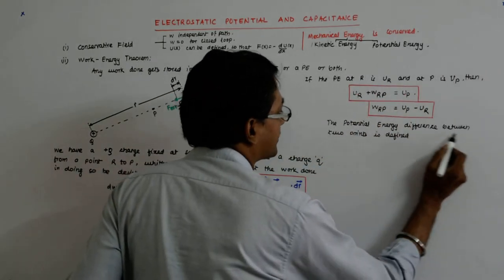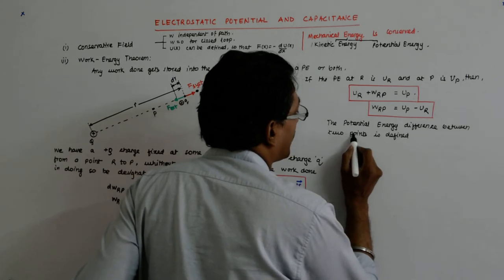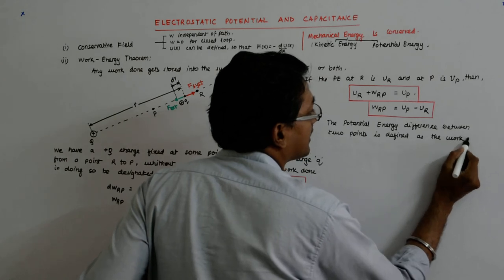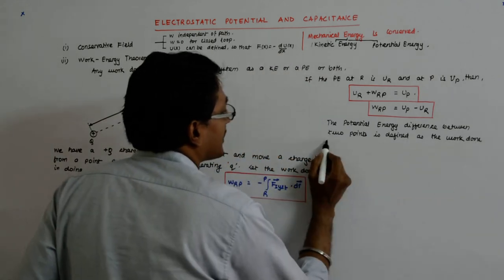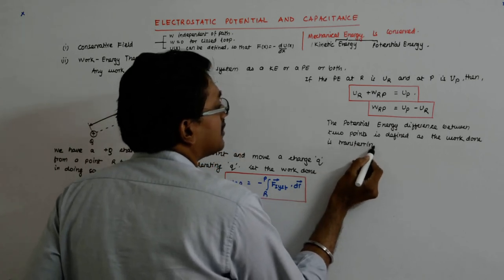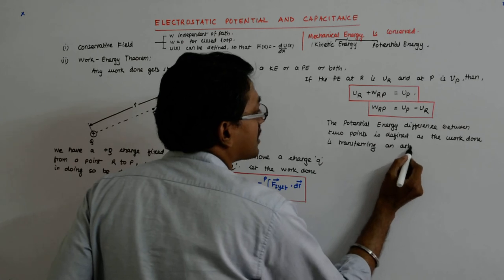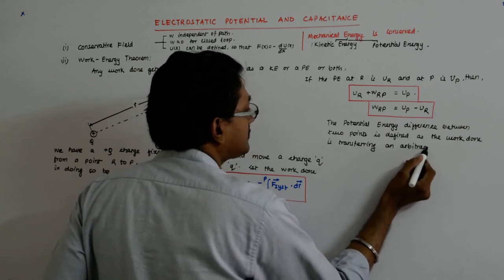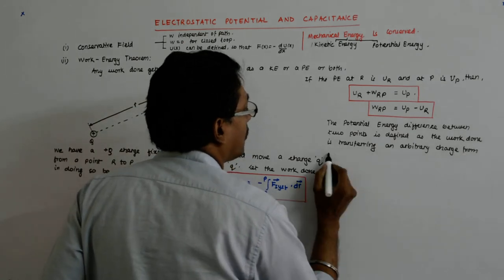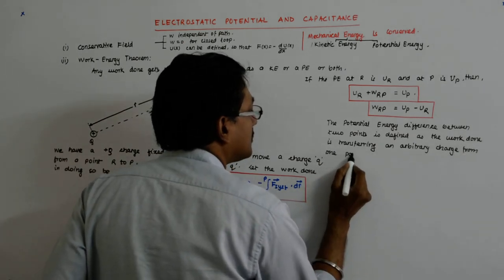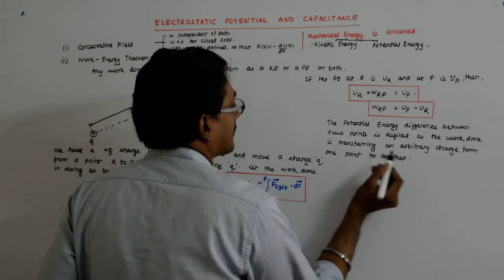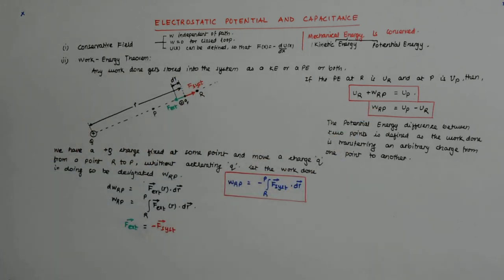So the potential energy difference between two points is defined as the work done in transferring an arbitrary charge from one point to another. So this is our potential energy difference.